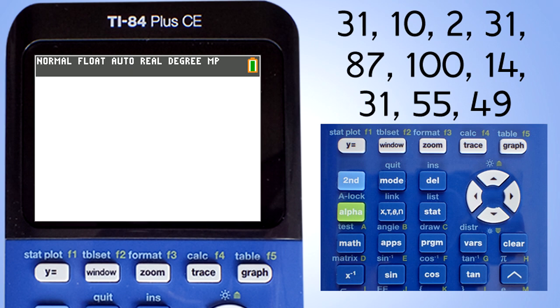31, 10, 2, 31, 87, 100, 14, 31, 55, and 49. Let's enter these numbers into a list.